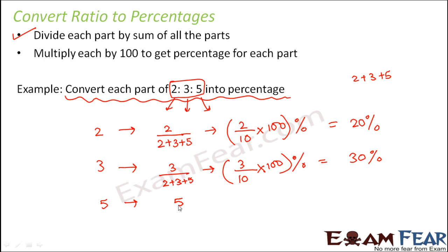And similarly 5 divided by 2 plus 3 plus 5. So this is 5 divided by 10 into 100. So this becomes 50%. So you see each part of the ratio got converted into a percentage. So if you see that the chocolates have been divided amongst three friends in the ratio 2 is to 3 is to 5, that means the first child got 20% of the chocolates, the second child got 30% of the chocolate and the third child got 50% of the chocolate. So this is basically the meaning of conversion of ratio to percentages.